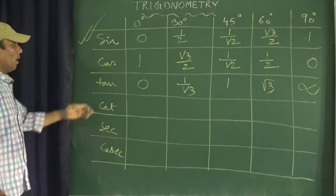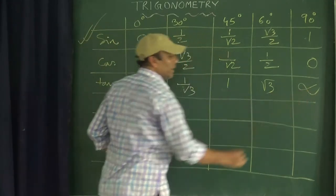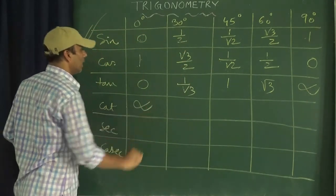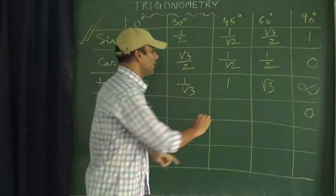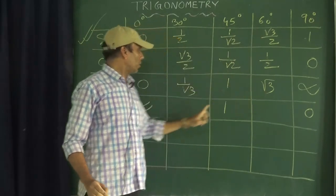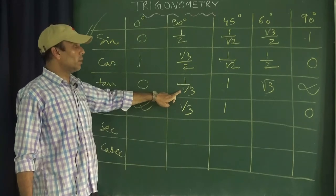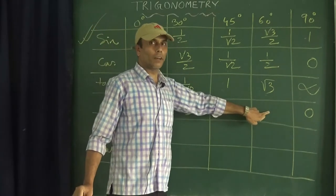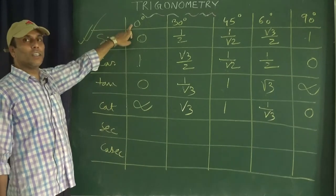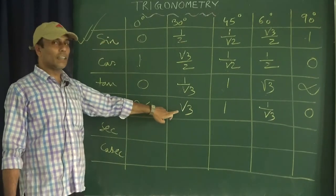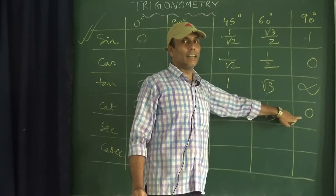To get cot values, apply the same cross technique used for cosine. The last value (undefined) comes first and the first value (0) goes last; the middle 45° value stays the same. Crossing 30° and 60°: cot0° = undefined, cot30° = √3, cot45° = 1, cot60° = 1/√3, cot90° = 0.